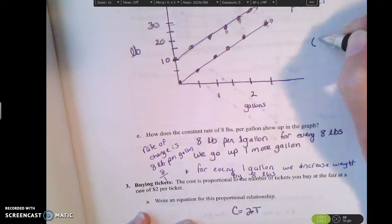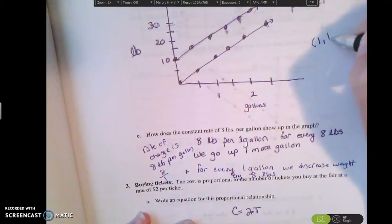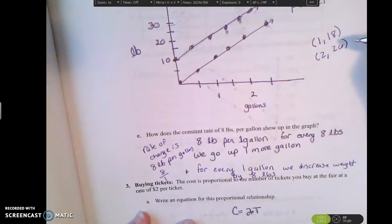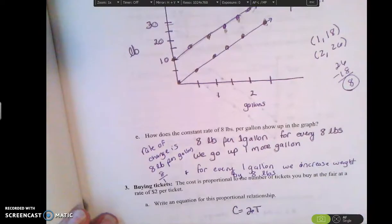So let me give you another example of that. So at 1 we were at 1, 18 and at 2 we were at 2, 26. So what is the change from 18 to 26? So 26 minus 18 equals 8. So the rate of change is 8. That's how much is increasing.